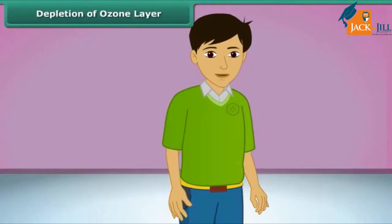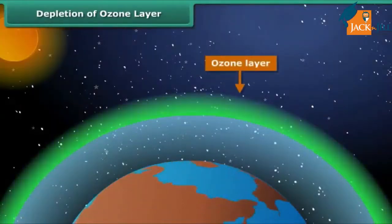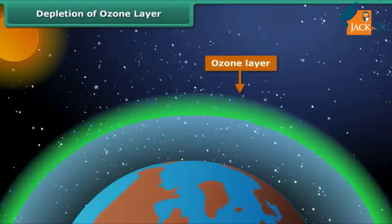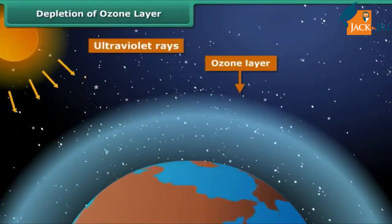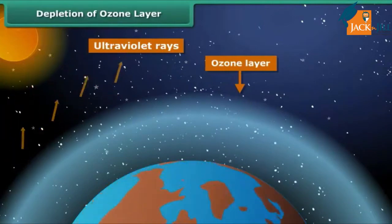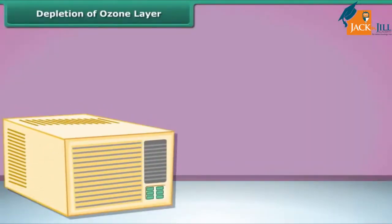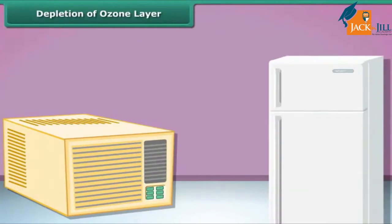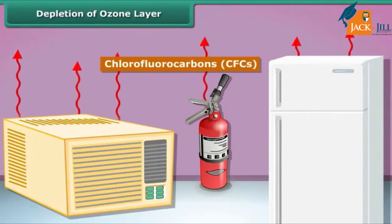The ozone layer is a layer of ozone gas in the upper atmosphere of Earth. Its role is to protect us from the harmful ultraviolet rays of the sun.